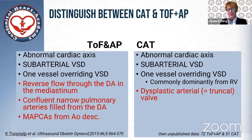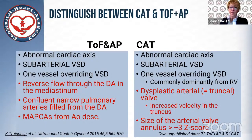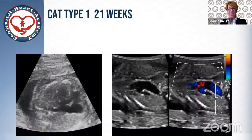Key differentiating features: in common arterial trunk, the velocity is usually higher than in tetralogy of Fallot with pulmonary atresia; the aorta usually has insufficiency; and the size of the arterial valve is always more than one z-score — so it is bigger than the aorta. These are simple clues how we can distinguish in the prenatal period pulmonary atresia from common arterial trunk.